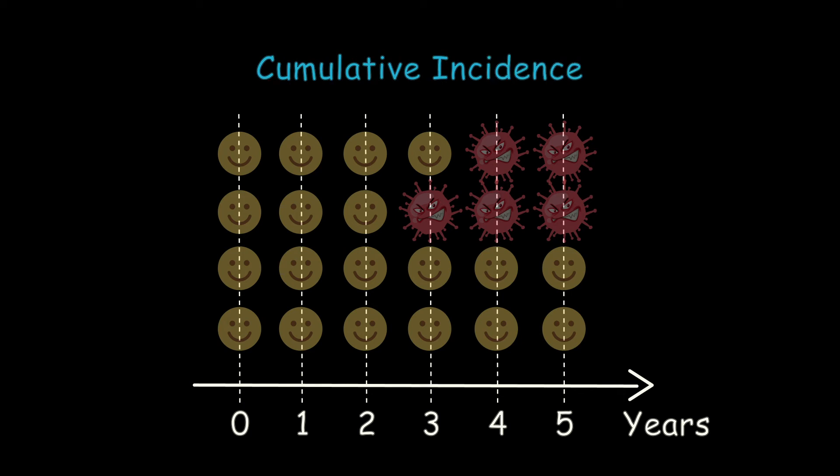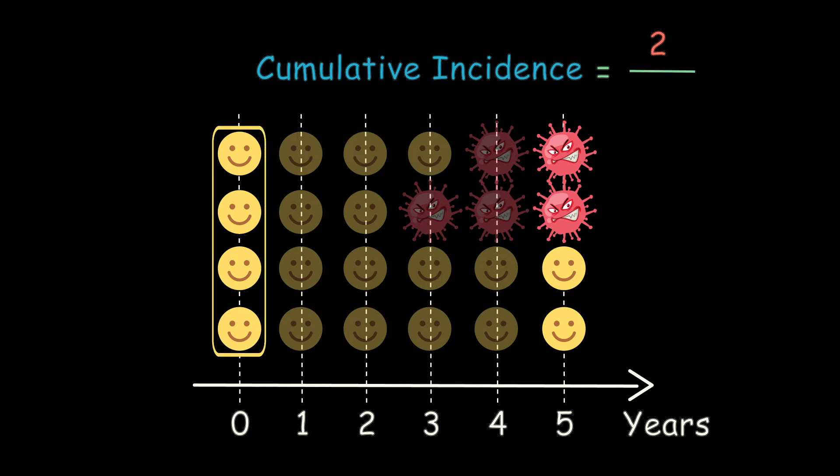To calculate the five-year cumulative incidence, we only need to observe this population at two times, one at the start and one at the end of the follow-up period. We divide the number of new cases that occur during these five years, which is two, by the size of the initial population at risk, which is four.